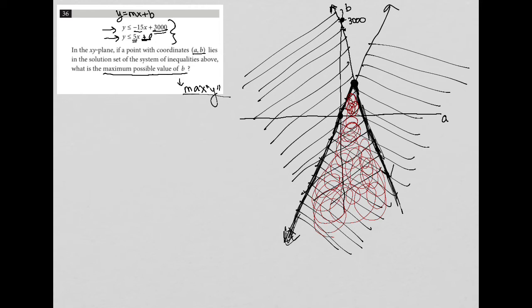So if you're ever trying to find the point of intersection between two lines, all you need to do is set the equations equal to each other. So I'm going to take equation one and equation two from the question and set them equal to each other. So instead of saying Y is less than or equal to negative 15X plus 3000, I'm going to say 5X is less than or equal to negative 15X plus 3000. Right. So basically, I just replaced Y with 5X. Hopefully you understand why I did that.